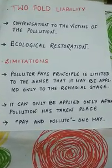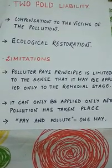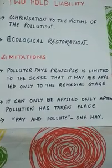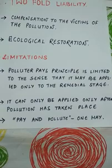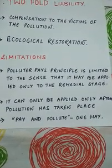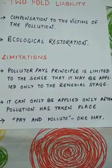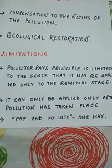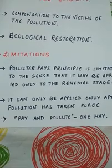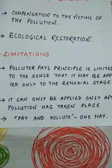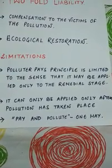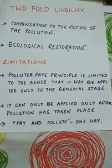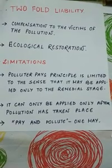Last but not the least is the limitation of PPP. Although the Polluter Pays Principle has its own remedies and ways of maintaining environmental standards, it is limited in the sense that it may be applied only at the remedial stage — that is, only after the pollution has already taken place. Once pollution occurs, it is used for remedial and compensational purposes. One may say it is a kind of 'pay and pollute' technique, where the person causing damage pays compensation and ecological restoration takes place after the fact.